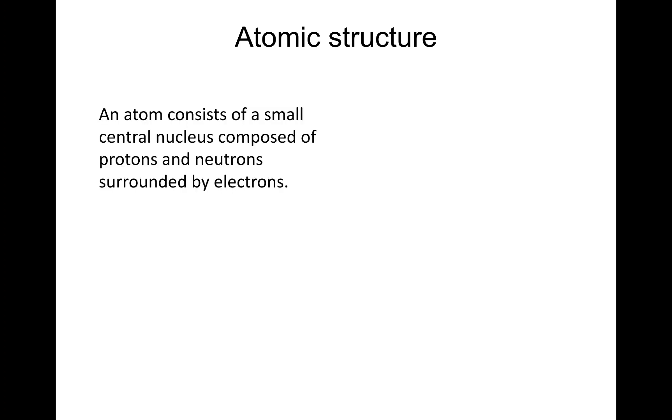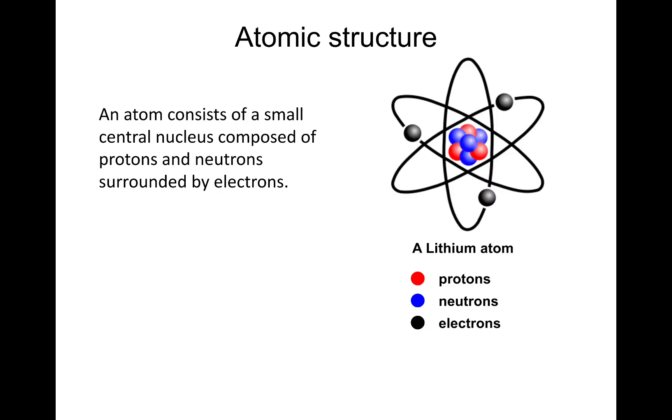An atom consists of a small central nucleus composed of protons and neutrons and surrounded by electrons. So this is a lithium atom. They're color coded. We've got three protons, three electrons, and four neutrons. An atom will always have the same number of electrons as protons, and that's to do with the charge. An atom's charge is neutral.